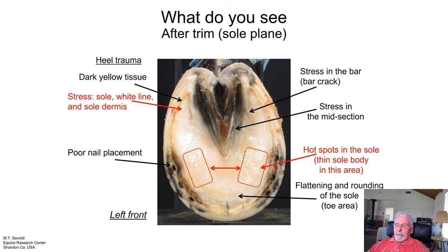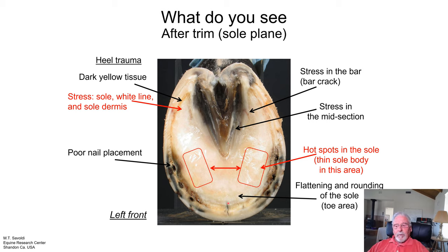There is flattening and rounding of the sole area in the toe. Here's a stress pop coming from the bone internally — see that change in tissue right there. That's a stress pop. The bone is pushing into the top of the sole, causing it to wrap around bone, and that's going to cause inflammation.